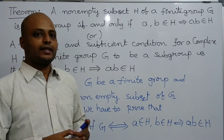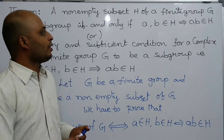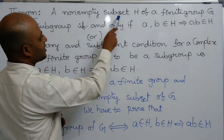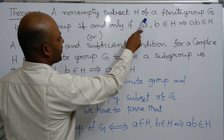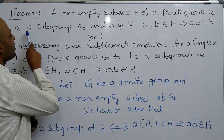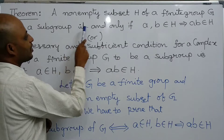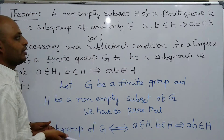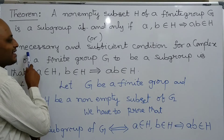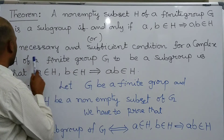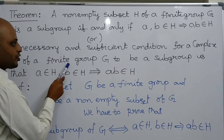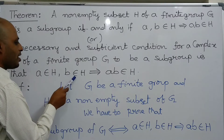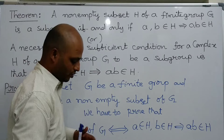In this class, we discuss about a theorem which is stated here: a non-empty subset H of a finite group G is a subgroup if and only if A, B belongs to H implies AB belongs to H. In other words, a necessary and sufficient condition for a complex H of a finite group G to be a subgroup of G is that A belongs to H, B belongs to H implies AB belongs to H.